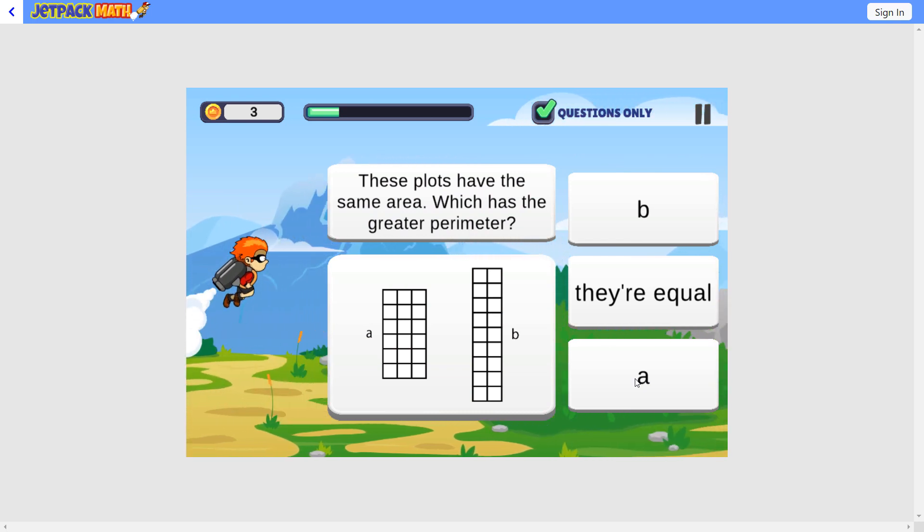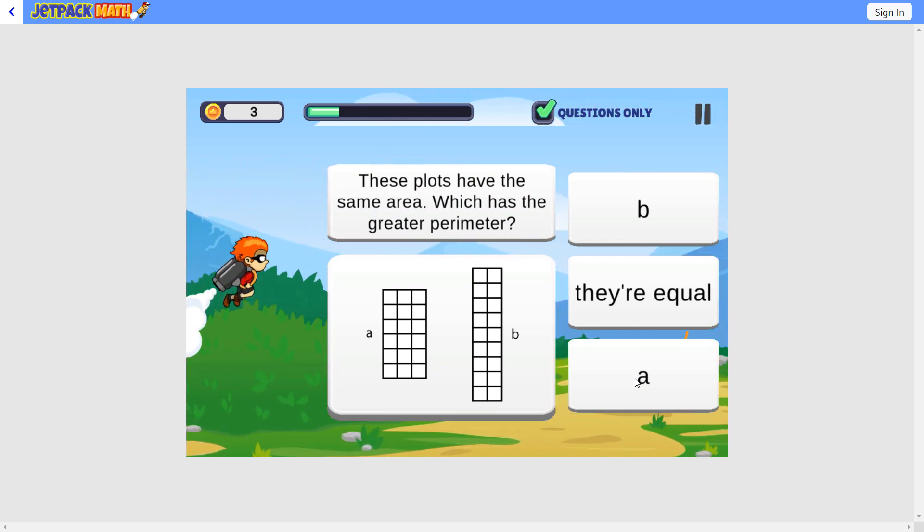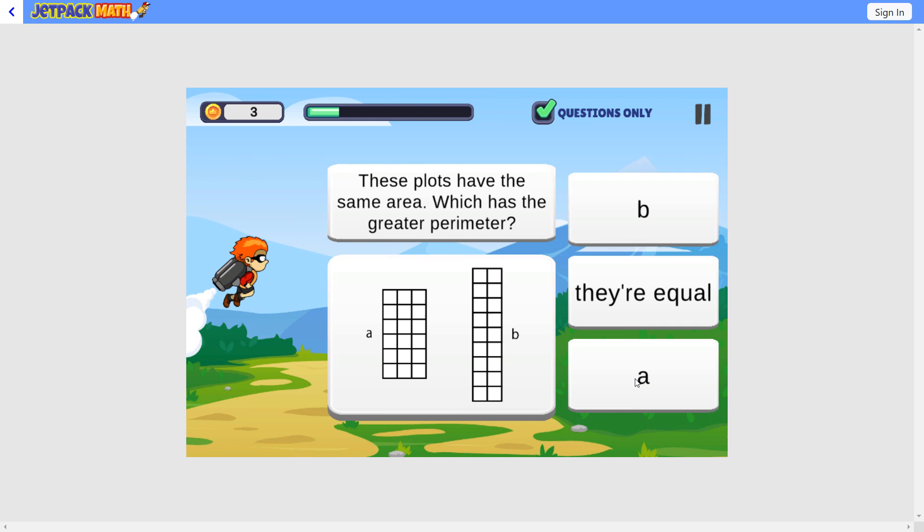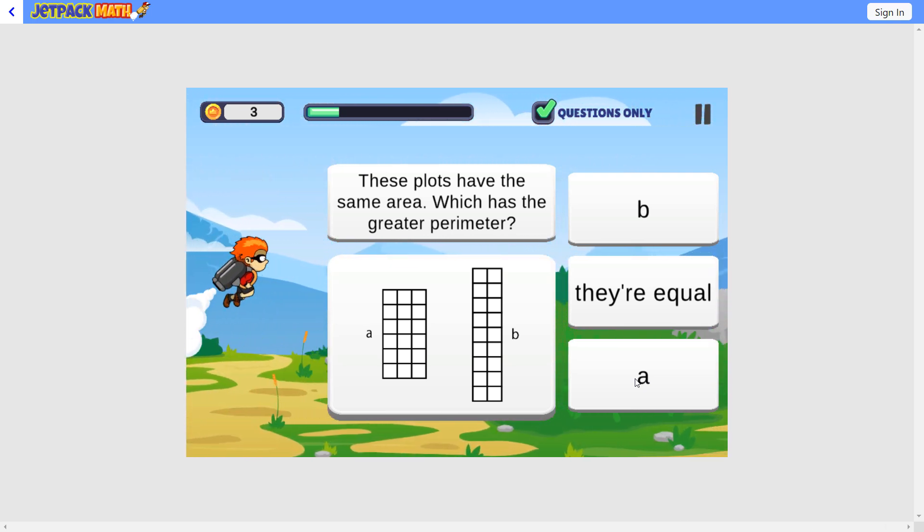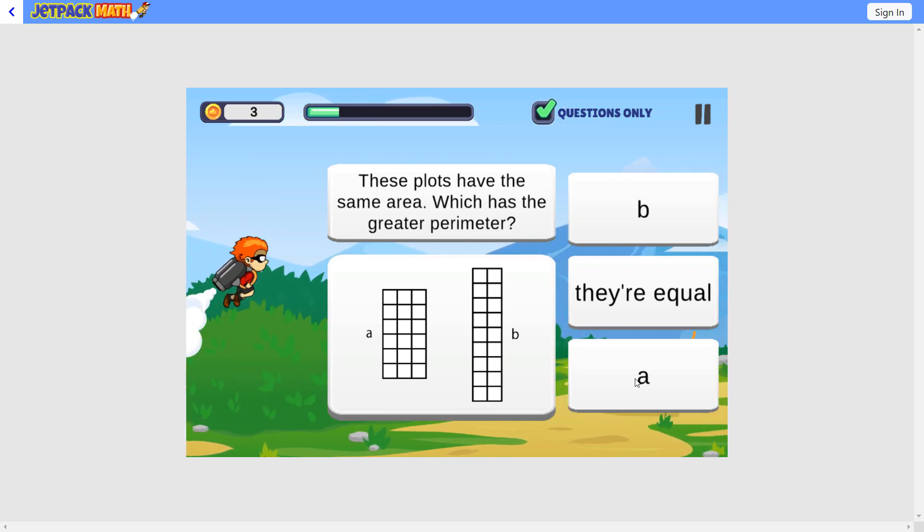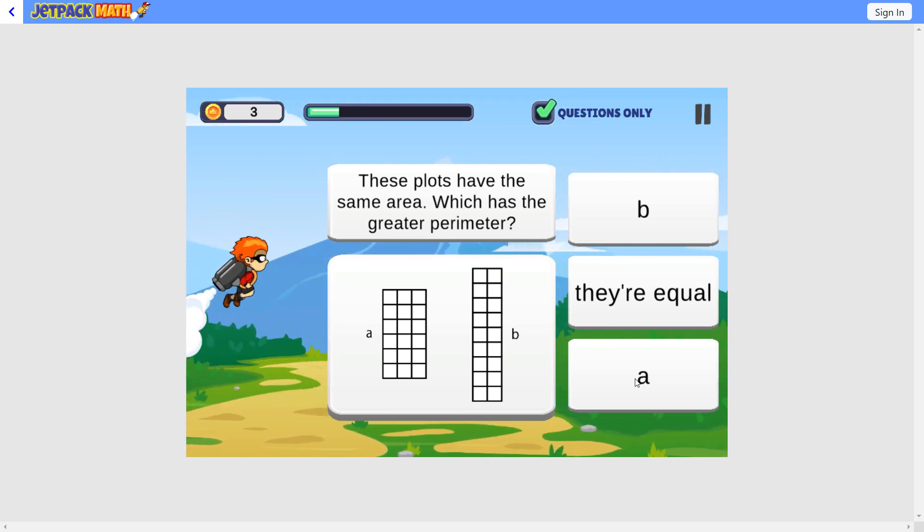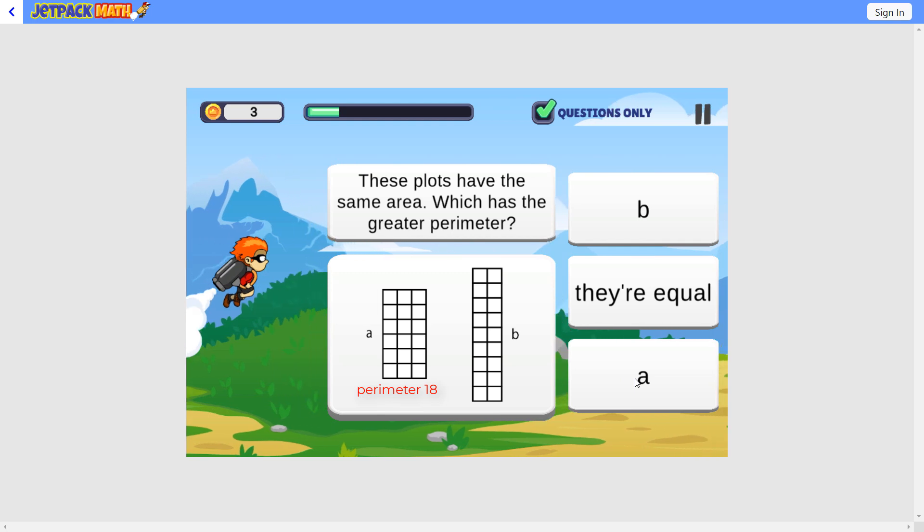These plots have the same area, which has the greater perimeter. So if we add these up, we get 6 plus 3 is 9. 9 times 2 is 18. So the perimeter on A is 18.